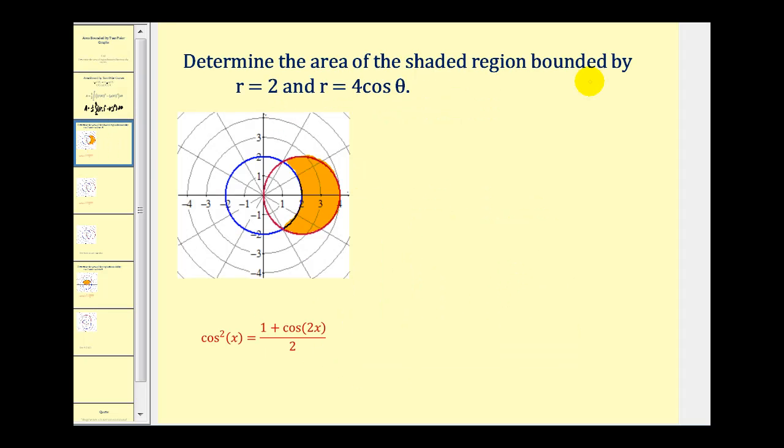We want to find the area of the shaded region bounded by r equals two, which is the circle in blue, and r equals four cosine theta, which is the circle in red. So it's pretty easy to see in this problem that the outer curve will be the red curve and the inner curve will be the blue curve.